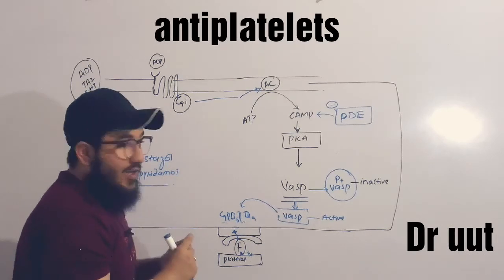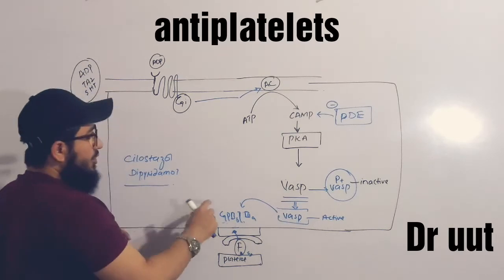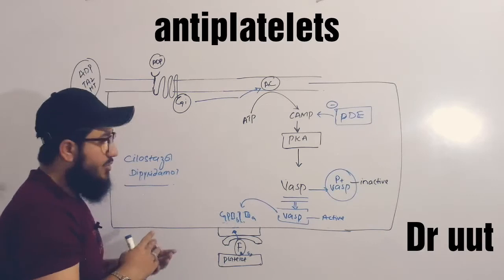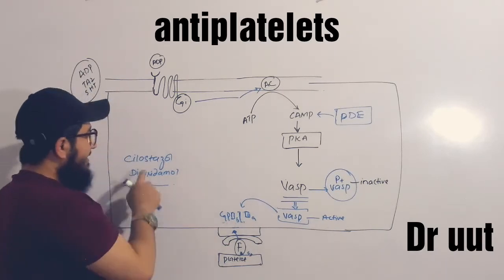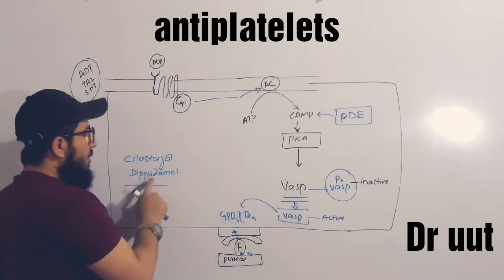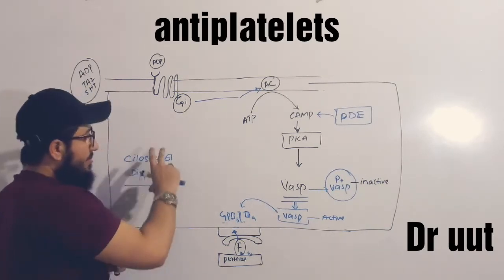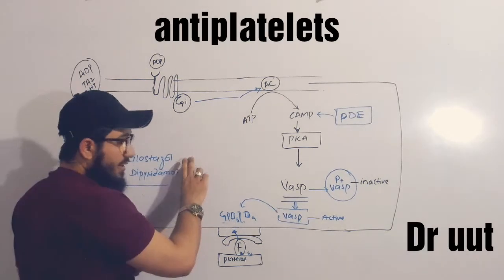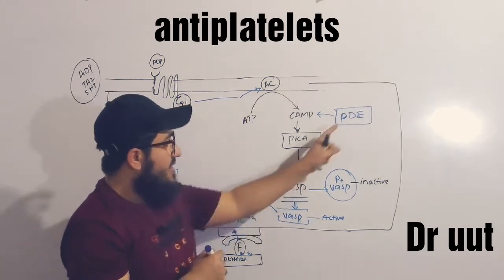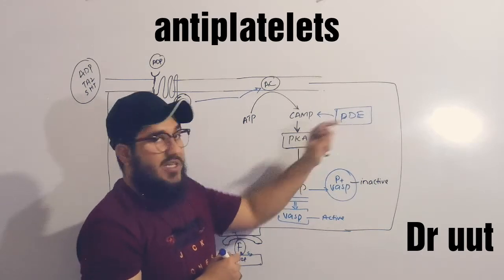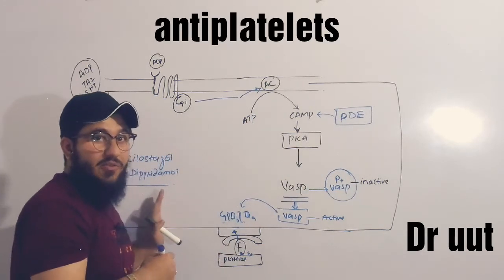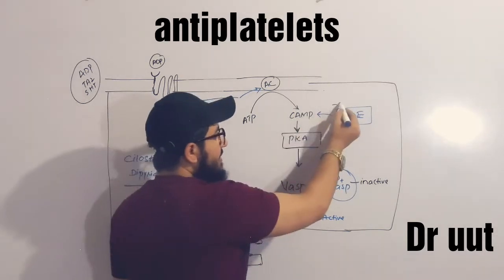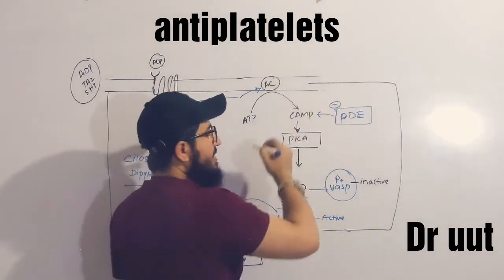So what we need is to stop the aggregation. In order to decrease aggregation, we give cilostazol and dipyridamole. What is their mechanism of action? These medications target the enzyme phosphodiesterase — they are known as phosphodiesterase inhibitors — and they inhibit phosphodiesterase.